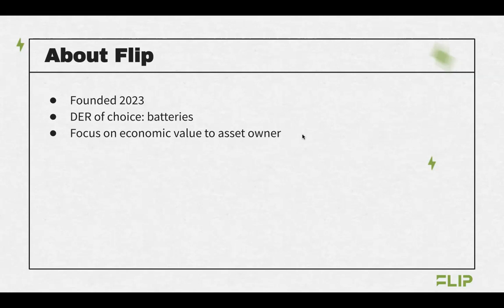That's a beautiful definition. What I like to say is that it's any aggregation of dispatchable assets — in the sense that if it's solar panels that just produce whenever they produce, you could turn them off potentially, which would make them dispatchable. But a battery or a thermostat, you can really change how they charge, discharge, whether they're consuming power. All of that makes them pretty powerful in terms of providing services to the grid.